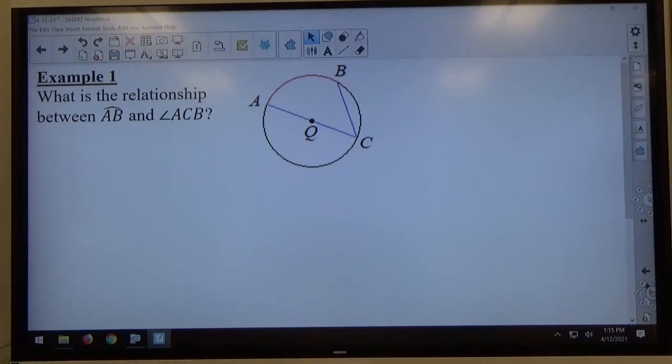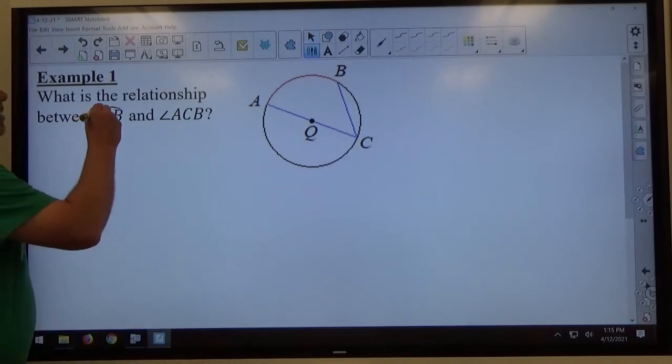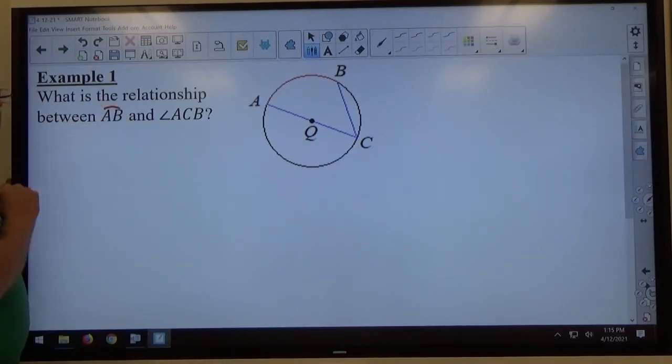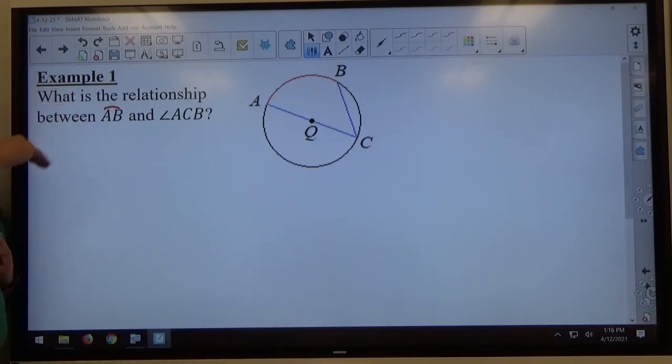Example 1 for section 10.4 says what is the relationship between arc AB and angle ACB. So arc AB - that's the best my computer software does, looks more like a hat than an arc - but arc AB...